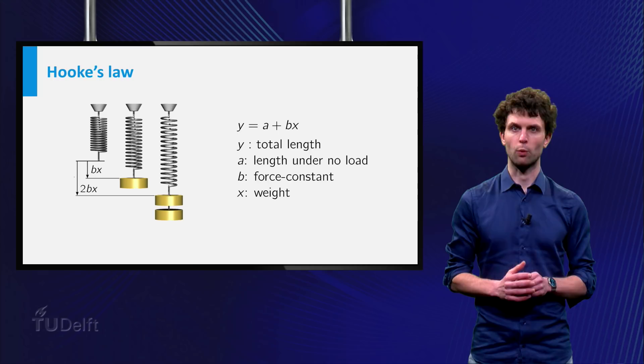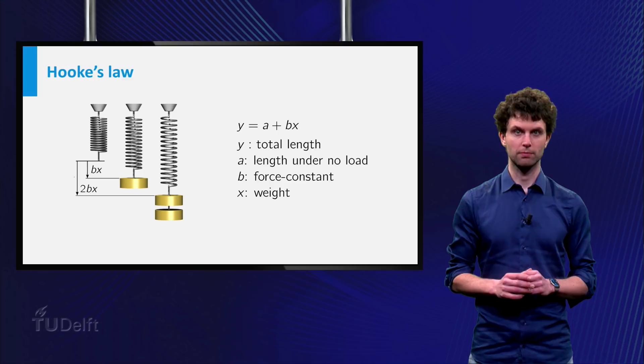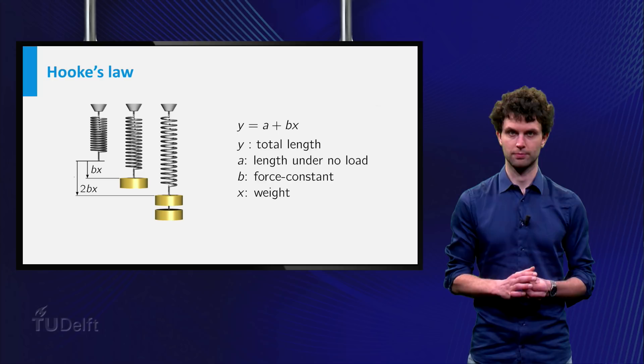Where y is the total length of the spring, a is the length under no load, x is the weight, and b is the so-called force constant of the spring.